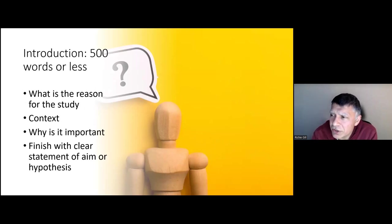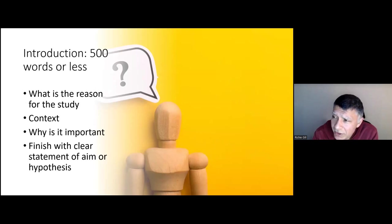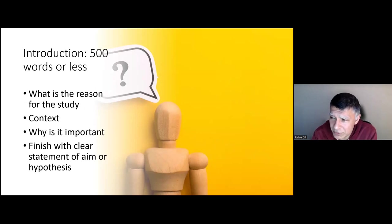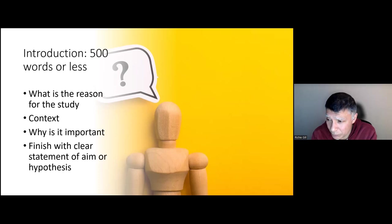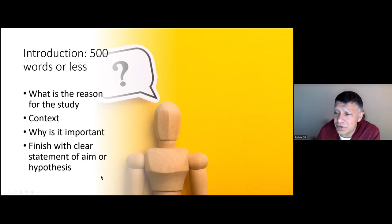In the paper by Brand and Huskies, the recommendation is that the introduction should be short — 500 words or less. This is where you explain why you're undertaking the study, provide enough context for people to understand it, explain why it is important, and then finish with either a clear statement of aim or a clear statement of the hypothesis being investigated.